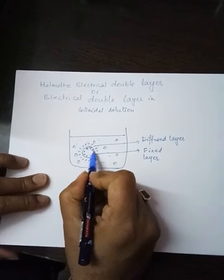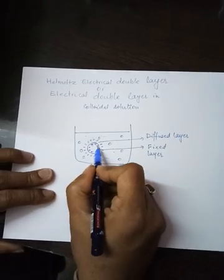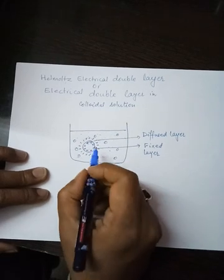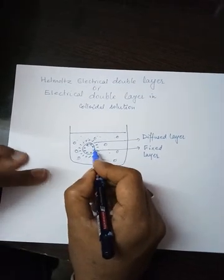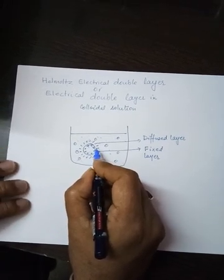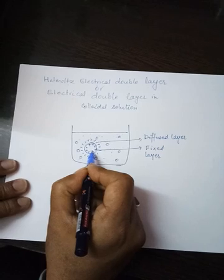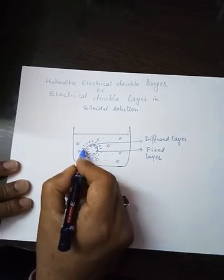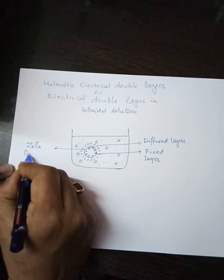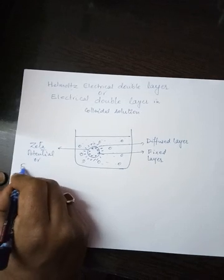There are two layers: one is fixed, present on the colloidal particle, and one is in the solution just around it. The separation between these two layers is very small. When there is a separation of charge, there always exists some potential — so there is a potential difference between the positively charged layer of the colloidal particle and the negatively charged layer. This potential is known as zeta potential, or electrokinetic potential.